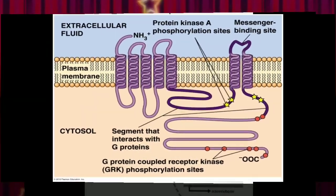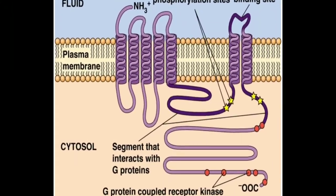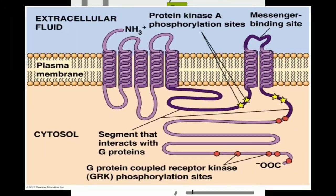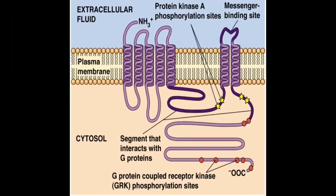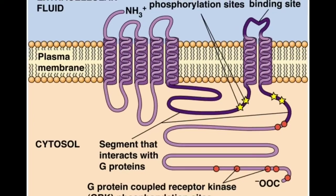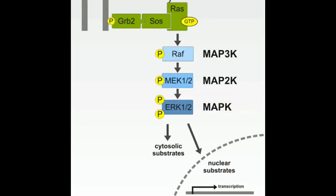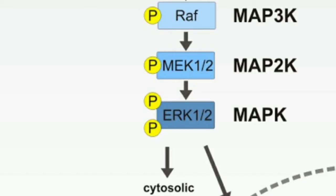Protein kinases may be membrane-bound or cytosolic based on their location in the cell. Cytosolic protein kinases are most often serine-threonine protein kinases. Examples of serine-threonine kinases are MAP kinases, also called RAF — Rapidly Accelerated Fibrosarcoma. MEK is an example of dual specificity kinases.